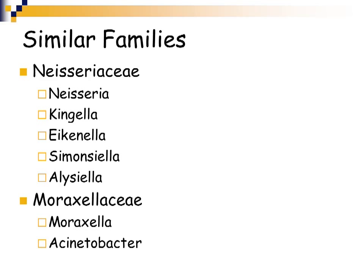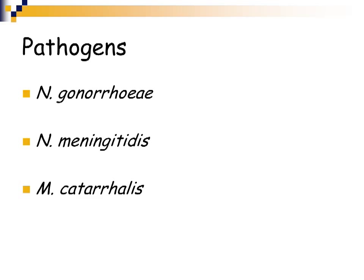The genera in the Neisseraceae family include Neisseria gonorrhoeae and Neisseria meningitidis. The genera in the Moraxellaceae family include the genus Moraxella and the genus Acinetobacter. The pathogens in the Gram-negative diplococci group are Neisseria gonorrhoeae, Neisseria meningitidis, and Moraxella catarrhalis — and these are the three organisms we're going to focus on in this lecture.